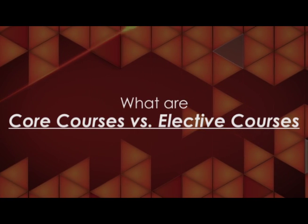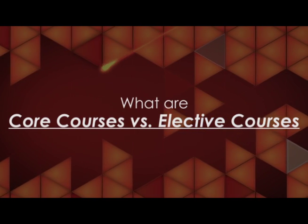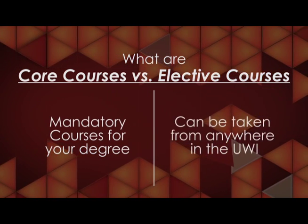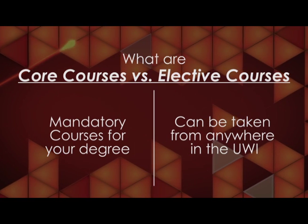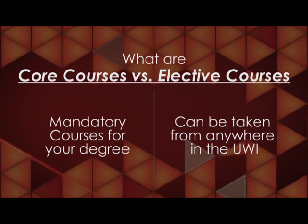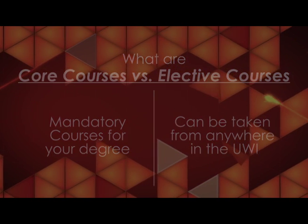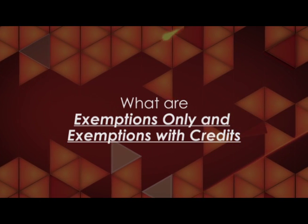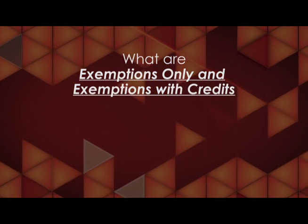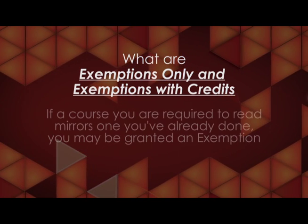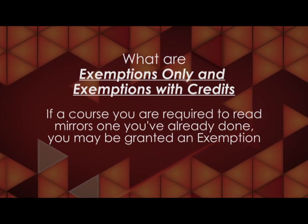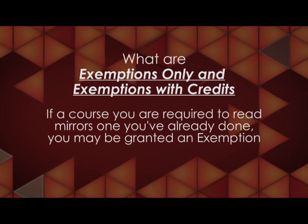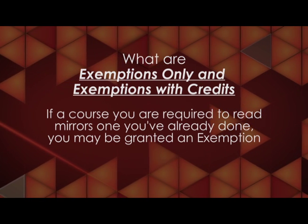A core course is mandatory for the completion of your degree program, while elective courses can be taken from any faculty within the university system. Please check your faculty booklet to see which are your mandatory or core courses. A student can be given an exemption only status or an exemptions with credit status if the course they are required to read mirrors a course passed at a previous institution. A levels and K courses are included. Please check the faculty booklet for the complete list of courses.